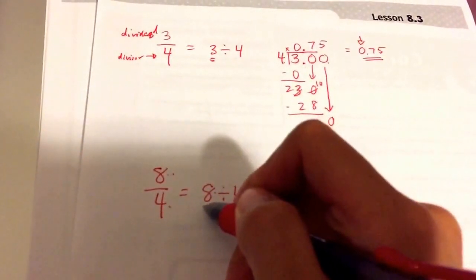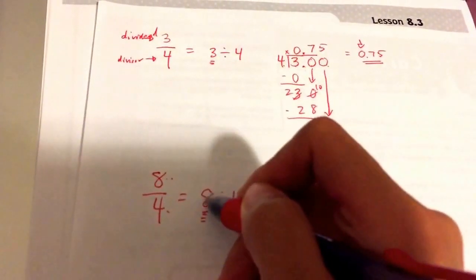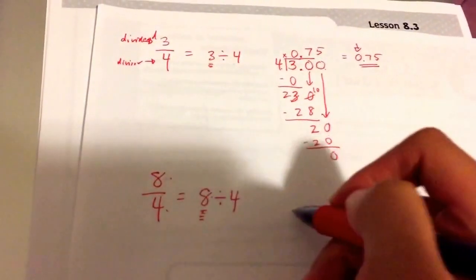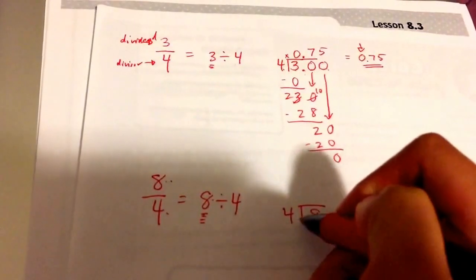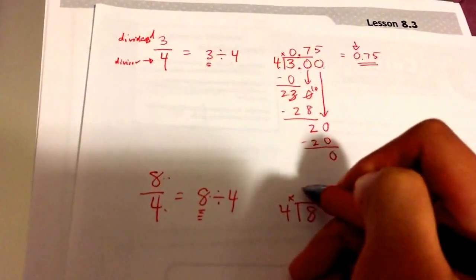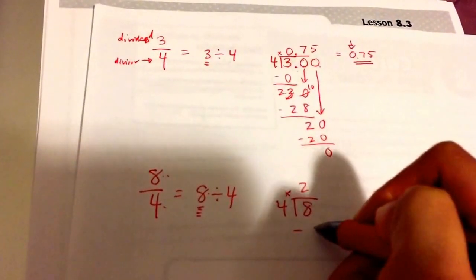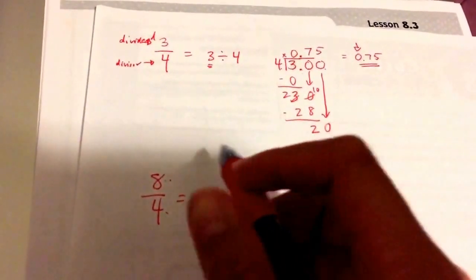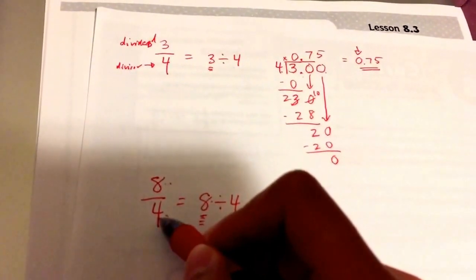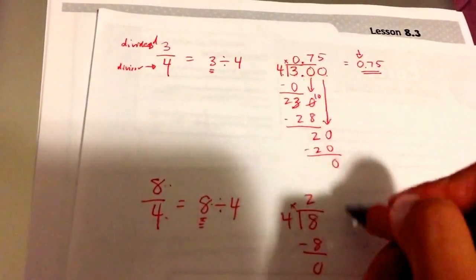The first number, it's not the bigger number, it's not the smaller number, it's our dividend. It's how much we have. It goes inside the house, 4. 4 times 2 is 8. And here you can see our answer is 2 whole. And think about it, 8 over 4 is the same as 2. 8 divided by 4 is the same as 2.